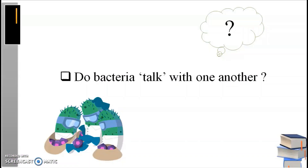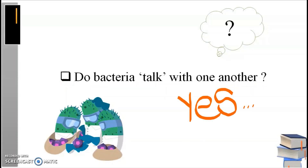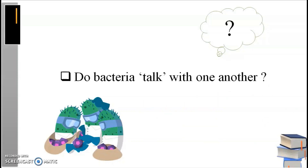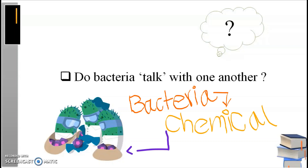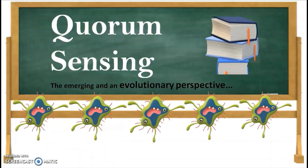Do you know that bacteria can talk with each other? Yes, it is true. Normally humans, animals, or higher organisms use different types of communication such as sounds, words, and facial expressions. But in bacteria it is different — they use chemicals to communicate. Scientists say it is a type of cell-to-cell communication via signaling molecules called quorum sensing. So our today's topic is on quorum sensing.